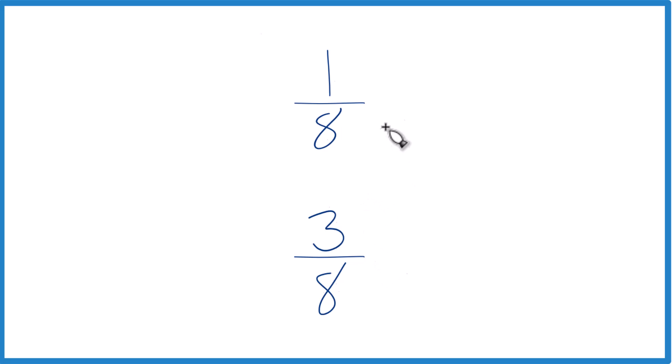But because we have the same denominator here, all we really need to do is compare the numerators. 3 is greater than 1, so 3 eighths is greater than 1 eighth.